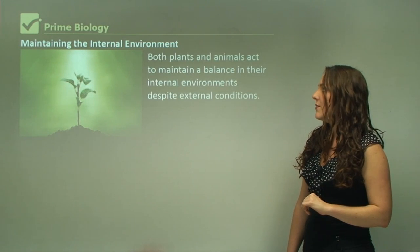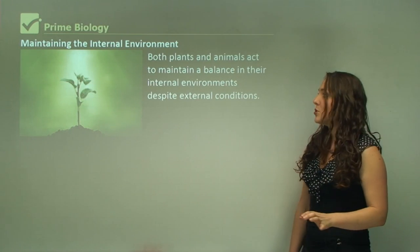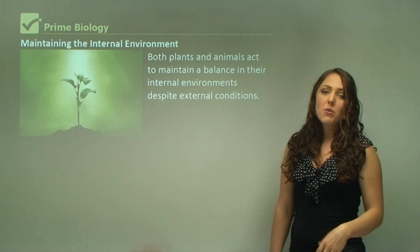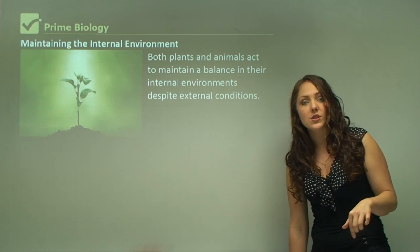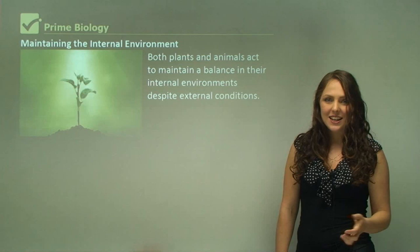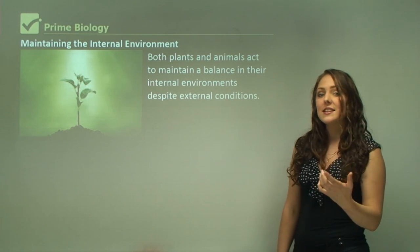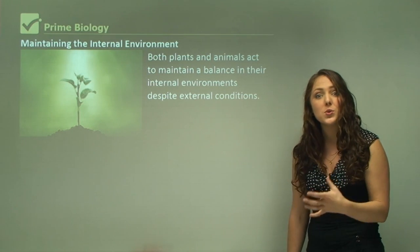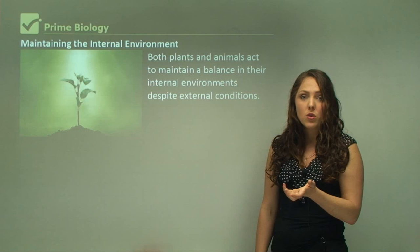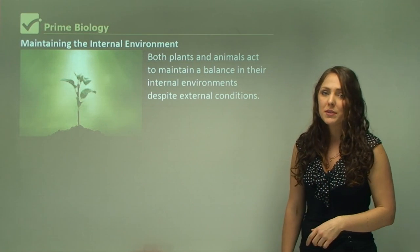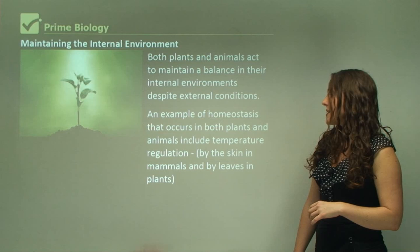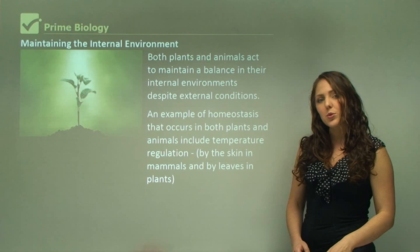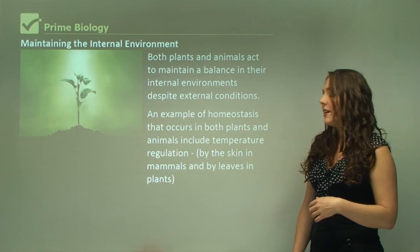Both plants and animals act to maintain a balance in their internal environments despite external conditions. We might sweat if it's hot or shiver if it's cold. Plants also need to cool down in excess heat — they open their pores to sweat, and when excess water evaporates from their pores, it cools the plant down. Temperature regulation occurs via the skin in animals and by the leaves in plants.